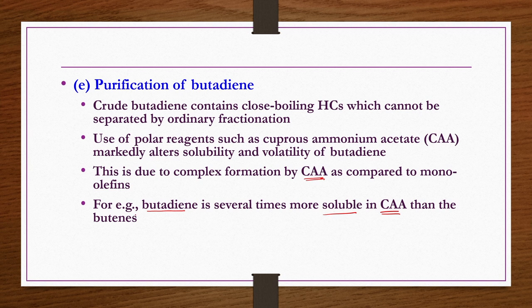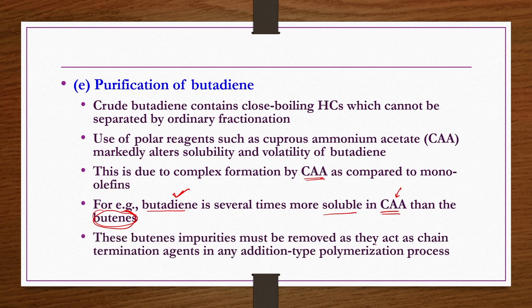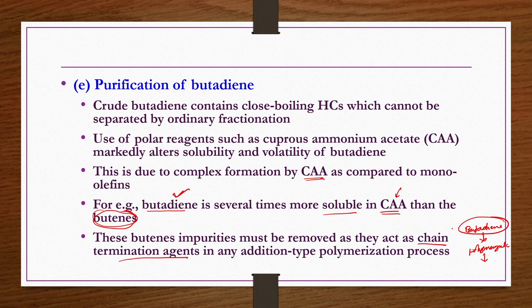Purification of butadiene is a critical engineering problem because the mixture contains butylenes, unreacted butane, naphtha from absorption, and other components. Crude butadiene contains close-boiling hydrocarbons that cannot be separated by ordinary fractionation, requiring extractive or azeotropic distillation. Polar reagents such as cuprous ammonium acetate markedly alter the solubility and volatility of butadiene due to complex formation — butadiene is several times more soluble in CAA than butane. Butane impurities must be removed because they act as chain termination agents in addition-type polymerization; high purity butadiene is required for effective rubber polymerization.